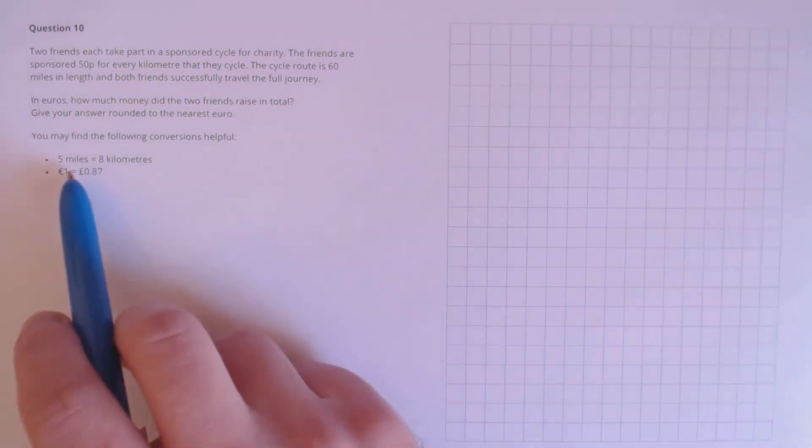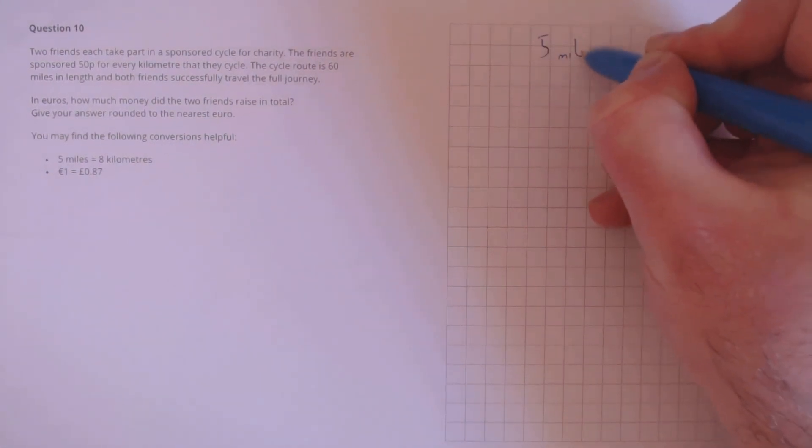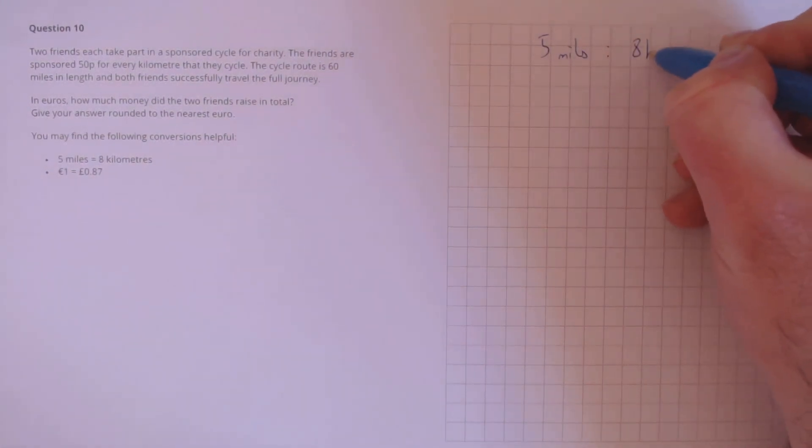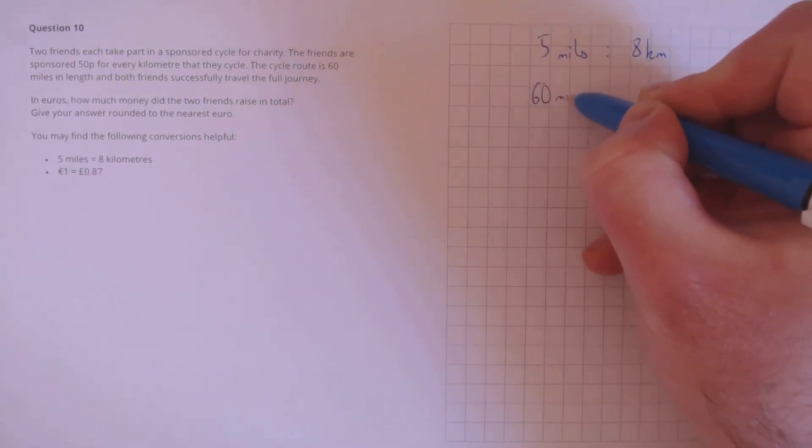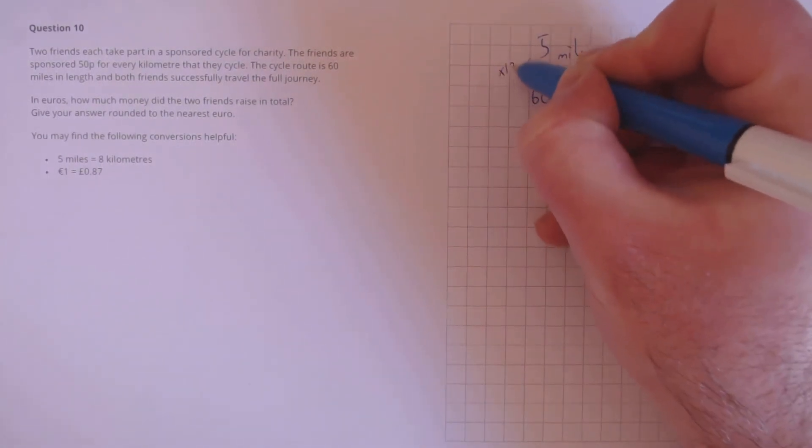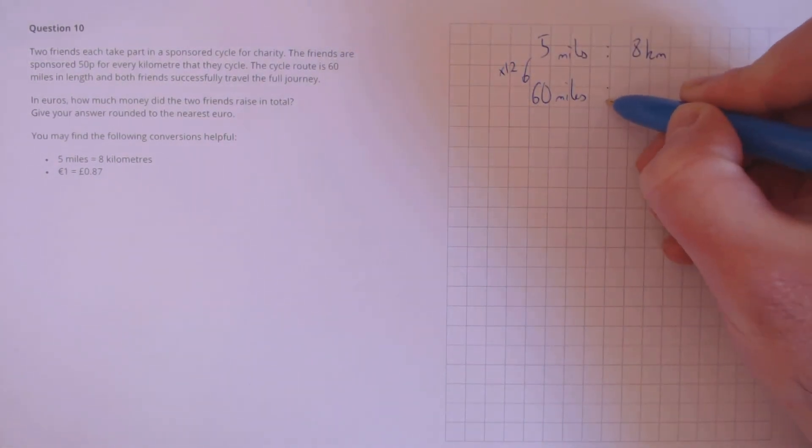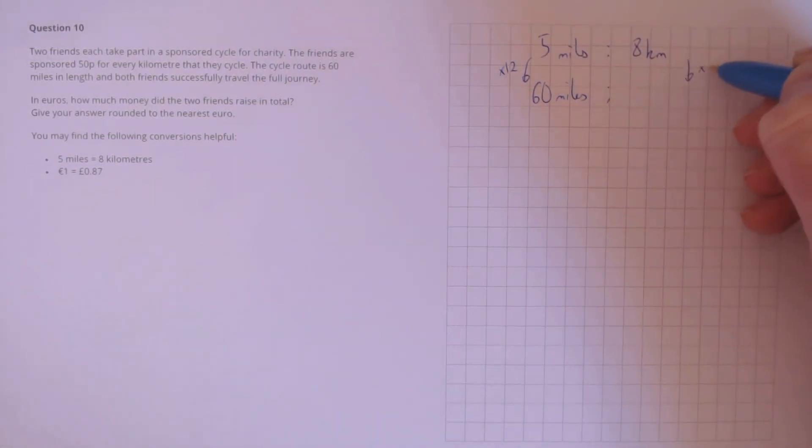Question 10. Two friends each take part in a sponsored cycle for charity. The friends are sponsored 50p for every kilometre that they cycle. The cycle route is 60 miles in length, and both friends successfully travel the full journey. In Euros, how much money did the two friends raise in total? Give your answer rounded to the nearest Euro. First, we're going to use the conversion 5 miles is 8 kilometres. We have 60 miles, which is the result of multiplying this side of the ratio by 12, so to do the conversion, we'll multiply the other side by 12, which is 96 kilometres.